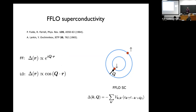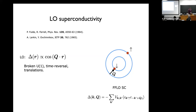There are two types of such pairing. The FF state has delta as a plane wave, and since all observables must be gauge invariant, this state remains translationally invariant. By contrast, the Larkin-Ovchinnikov state has a modulated density where the order parameter goes like cosine. I'm going to be focusing on the Larkin-Ovchinnikov state, which breaks U(1) as superconductors always do, and also breaks translational symmetry and can break time reversal symmetry.